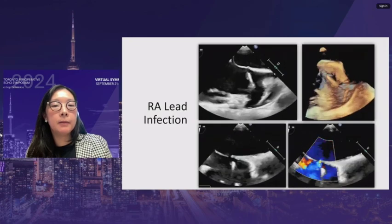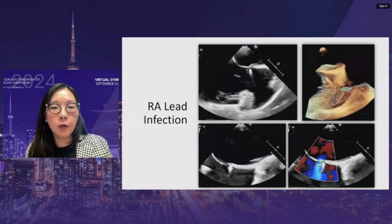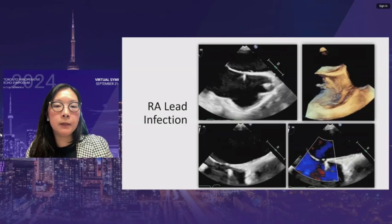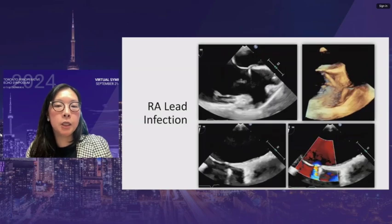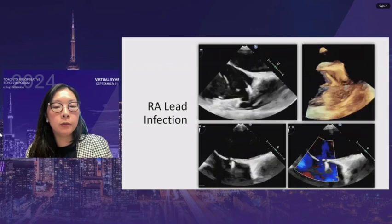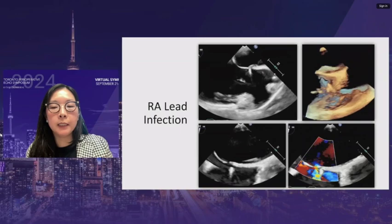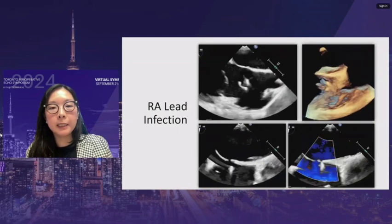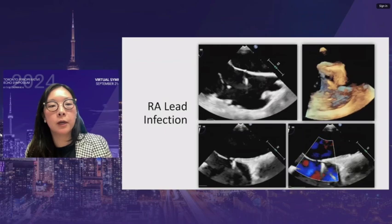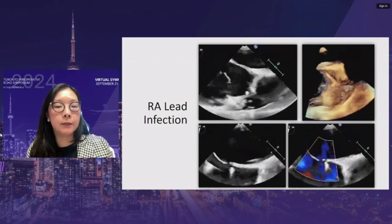Not just prosthetic valves but any intracardiac or intravascular device can become infected. A patient with a pacemaker lead shows the right atrial lead going into the right atrial appendage with a large vegetation on it. Additionally, a small ASD with shunting is present — making this more of an emergency due to concerns of embolization, even though the flow is predominantly left to right.